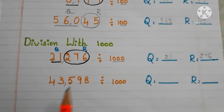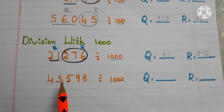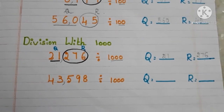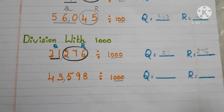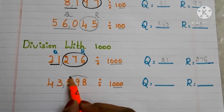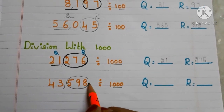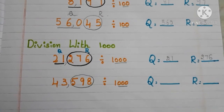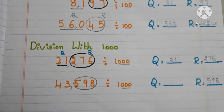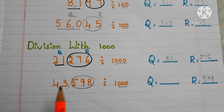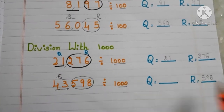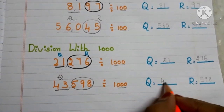Let us go to another example. Here we have 43,598 divided by 1000. In 1000, three zeros are there. So the last three digits — 598 — become the remainder. The remaining digits become the quotient. Here 43 becomes the quotient.